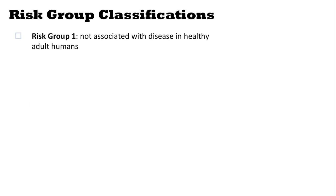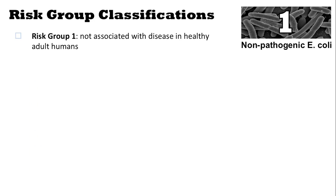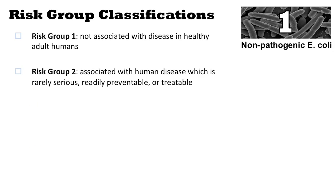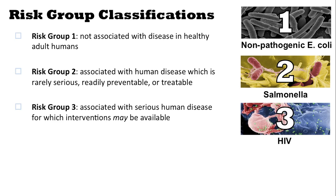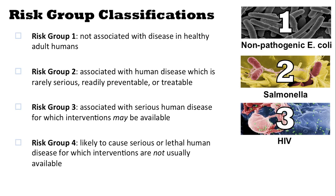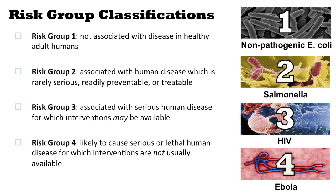Based on these things, we come up with a risk group classification. Risk group 1 agents are not associated with disease in healthy adult humans — an example is non-pathogenic E. coli. Risk group 2 agents are associated with human disease, but rarely serious, and are readily preventable or treatable — an example is salmonella. Risk group 3 agents are associated with serious human disease for which interventions may be available — an example is HIV. Lastly, risk group 4 agents are likely to cause serious or lethal human disease and interventions are not usually available — an example is Ebola.